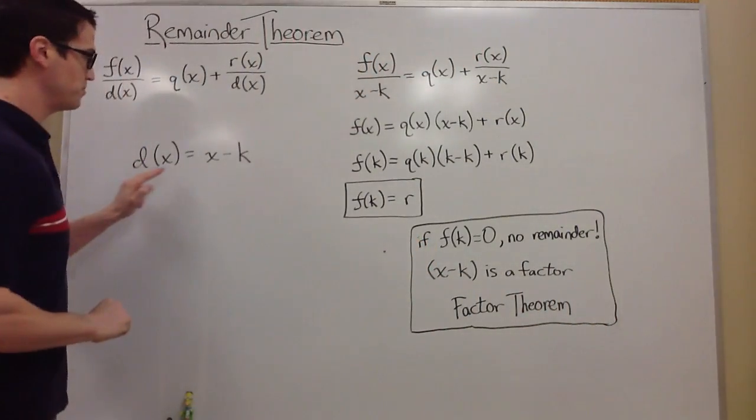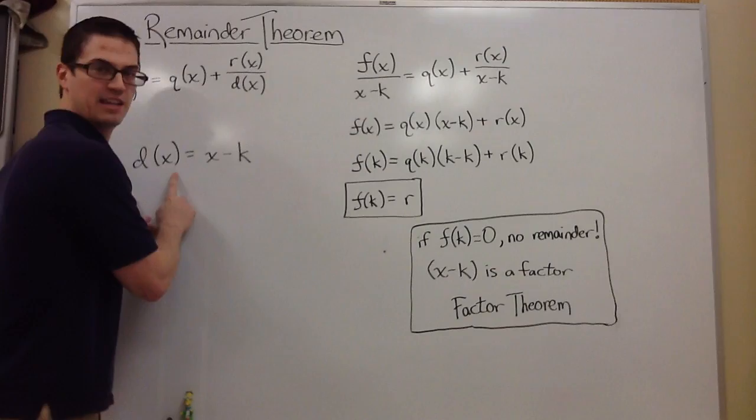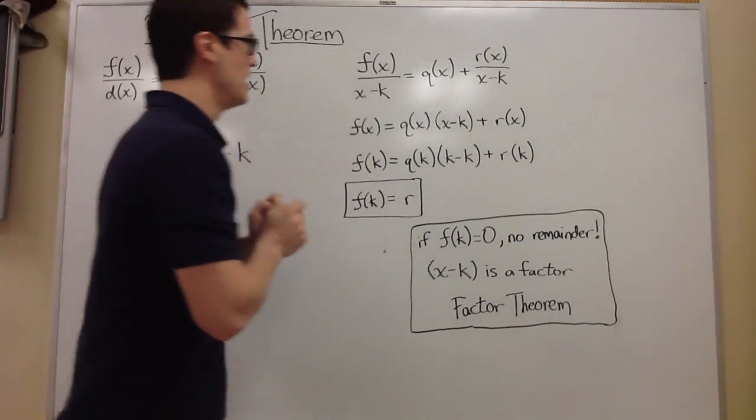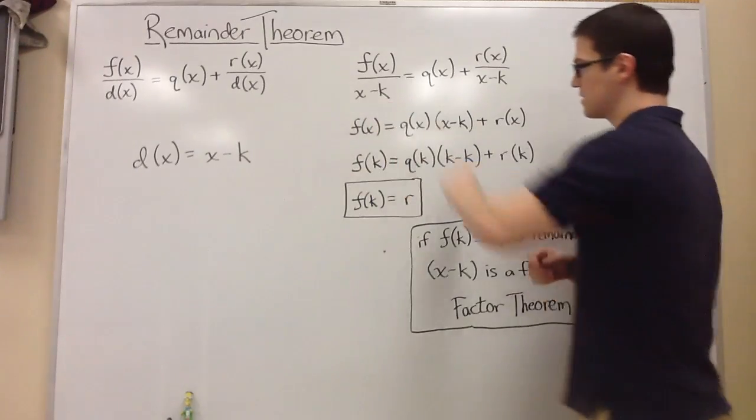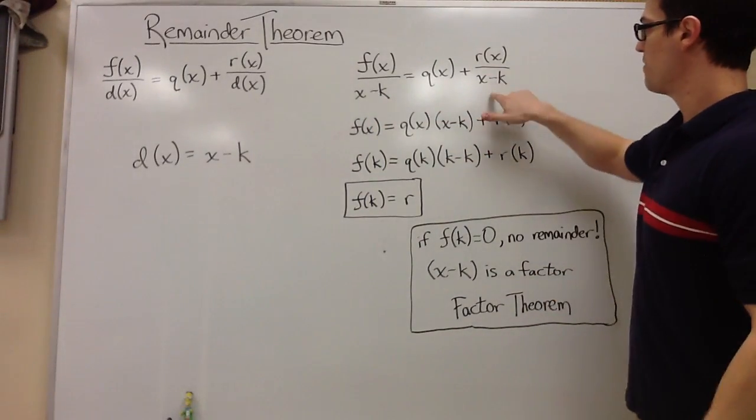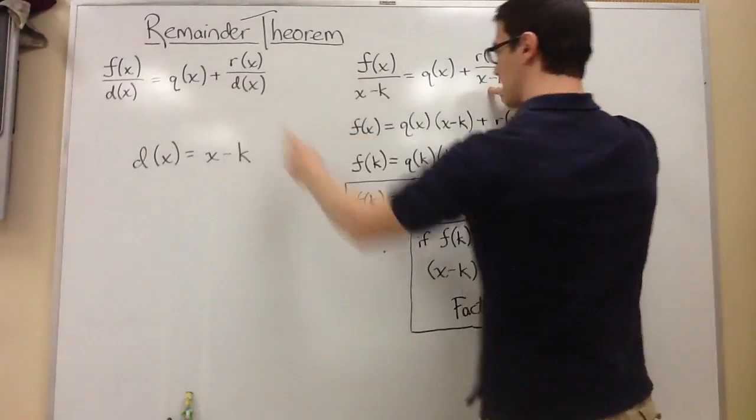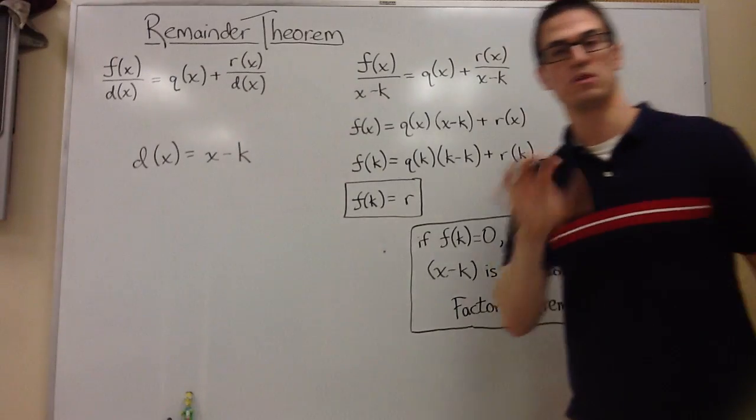I put x minus k in for d of x, because that's what we're going to mostly be looking at, linear functions with a slope of 1. What I'm going to do here is substitute this x minus k in for the d of x in the original equation. As you can see, instead of f of x over d of x, I replaced it with x minus k, and same with r of x over d of x.